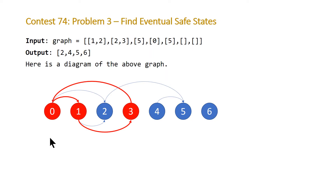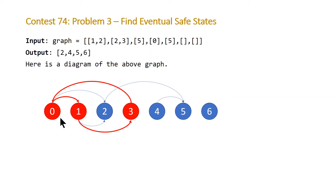For instance, starting at node 0 you can move to node 1, then from 1 to node 3, and then from 3 you can get back to node 0. So this question is basically asking which nodes are safe — nodes that won't end up in cycles. Another way of phrasing this question is: given a graph, return all nodes that are not in cycles.